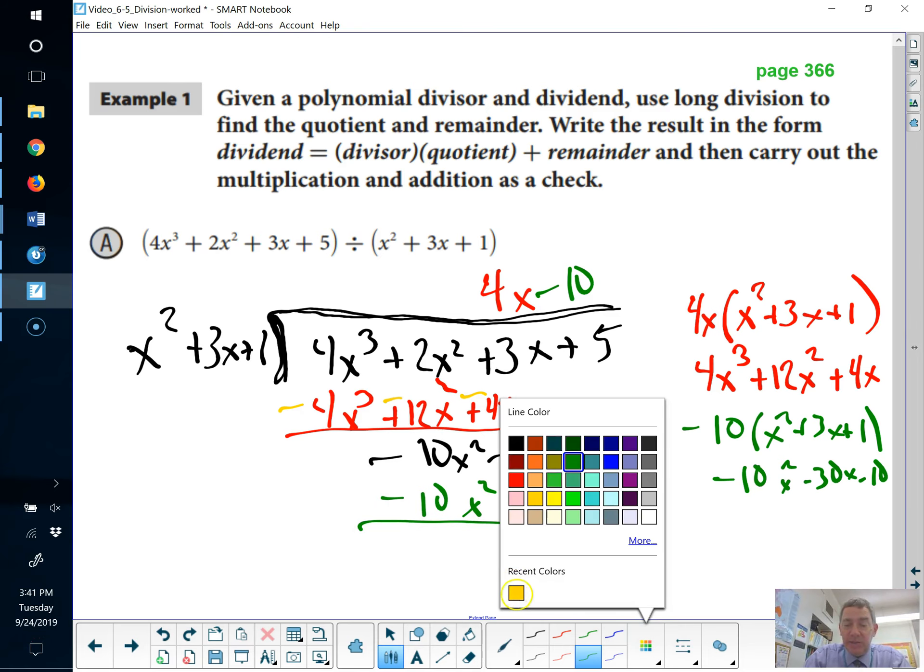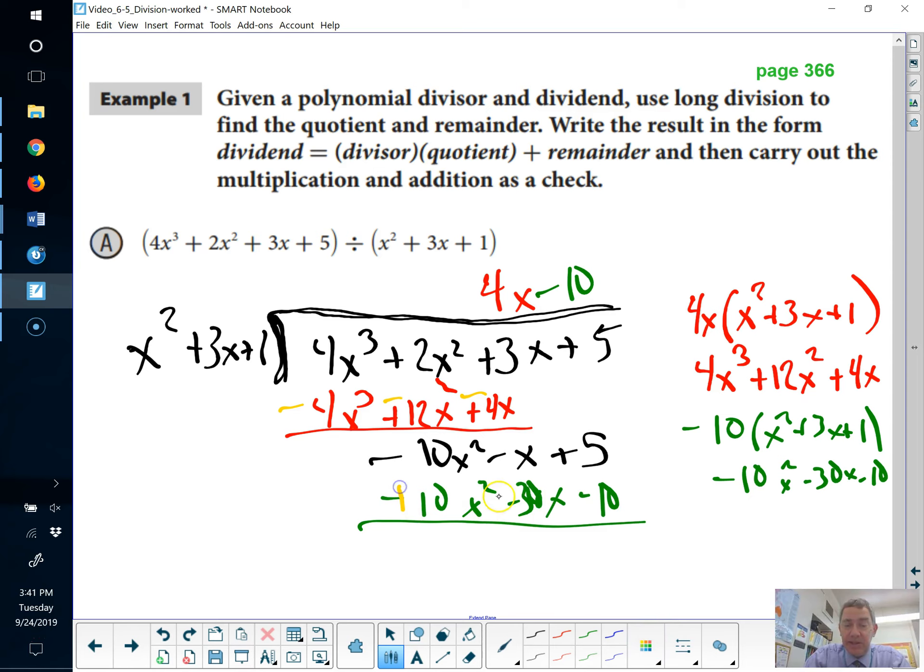And again, here, subtracting negatives, I'm going to say it's easier to change the signs and add them together. And then, we see what we've got. So, minus 10x squared plus 10x squared is nothing. Hooray. Minus x plus 30x is 29x. 5 plus 10 is 15. 29x plus 15 is the remainder.